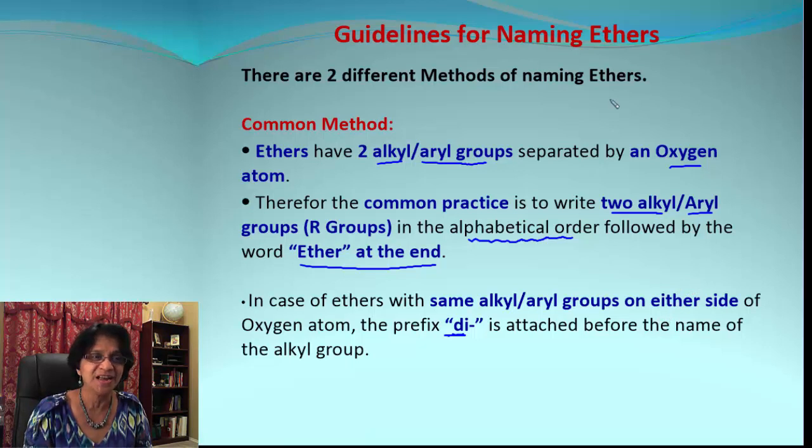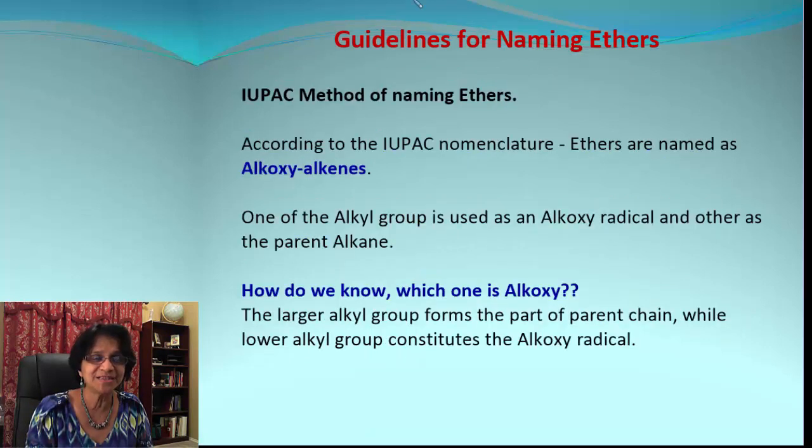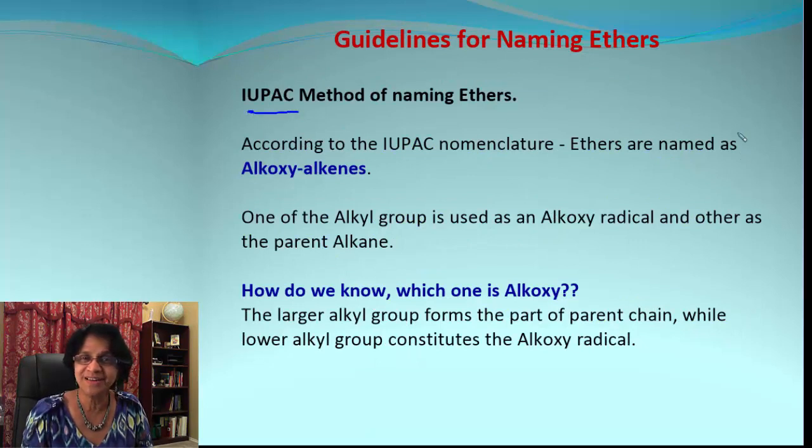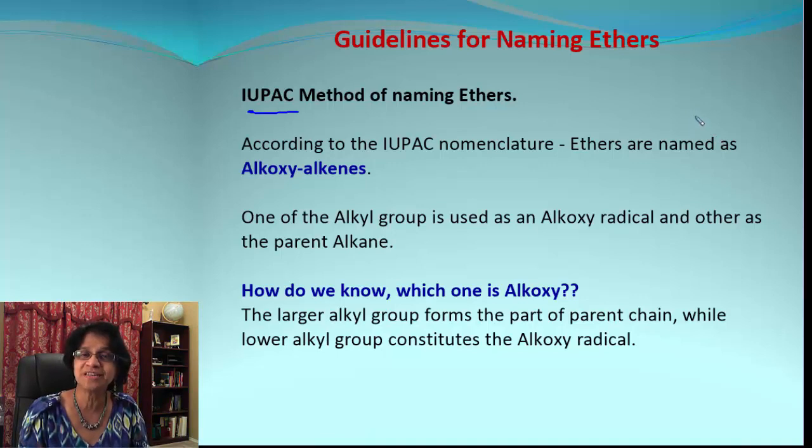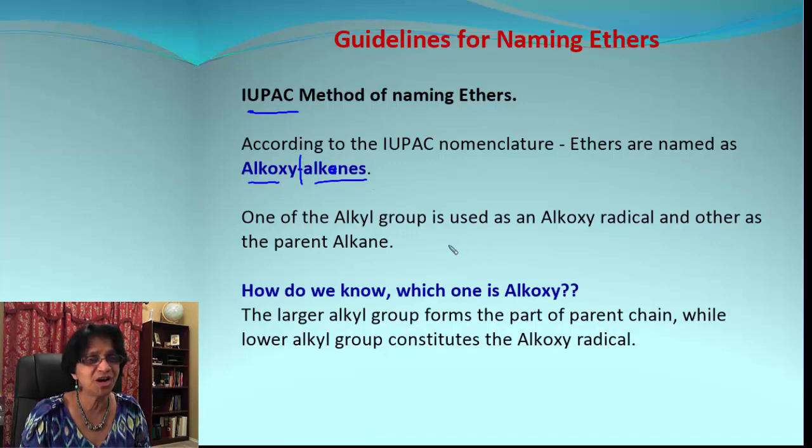What is the other method? This is the IUPAC method of naming the ethers. The IUPAC system is universally adopted method and that's why we will be using this for our class. In this method, ethers are considered as alkoxy alkanes. So out of the two alkyl groups, which alkyl group is going to be alkoxy and which one is going to be alkane? How do we decide that?